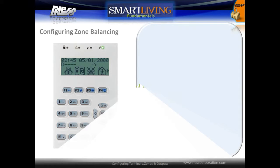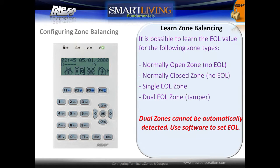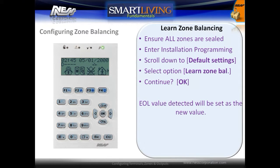It is possible to learn the end-of-line resistor value for individual zones. Note that when using zone doubling, end-of-line resistor values cannot be automatically detected. This should only be performed if using a combination of single zones and normally open/normally closed zones. To automatically detect the end-of-line value, ensure that all zones are sealed, enter into program mode, scroll down to Default Settings, select the option Learn Zone Balancing, and press OK to continue.